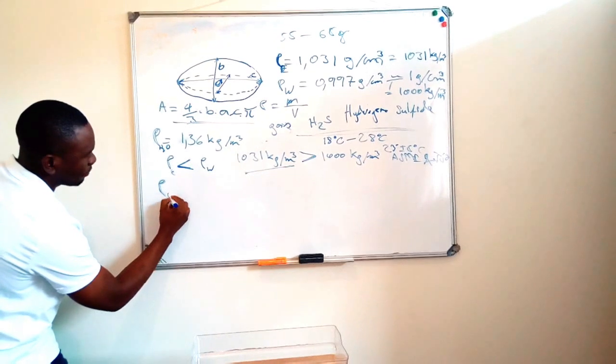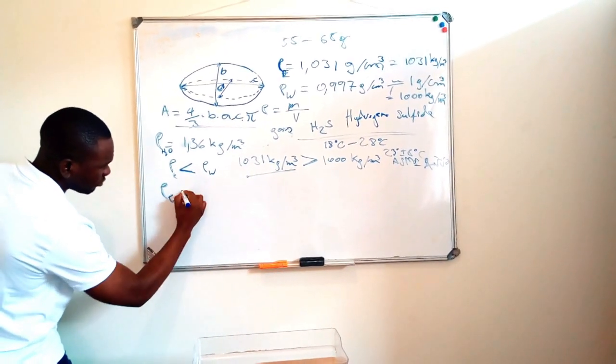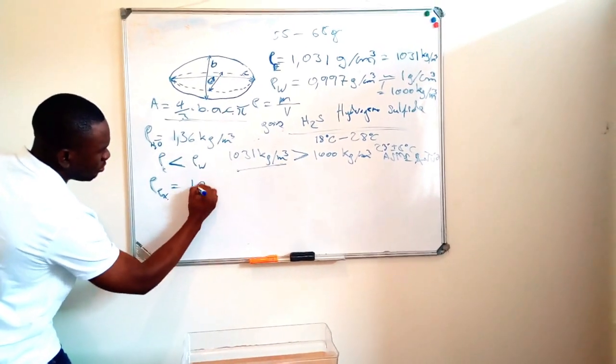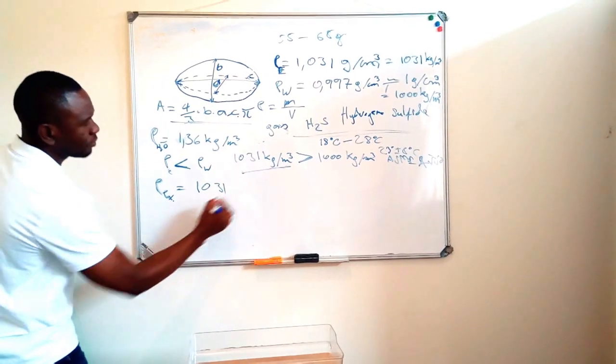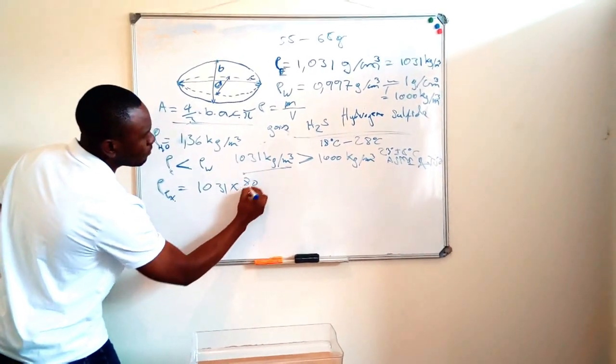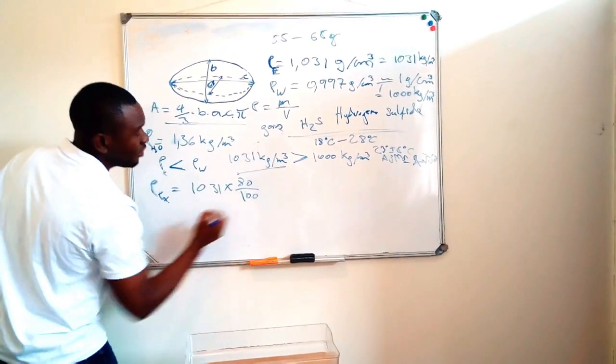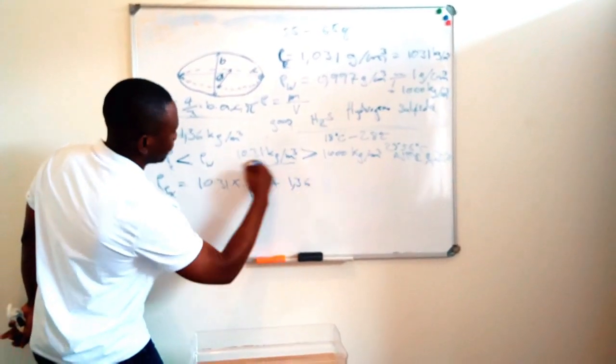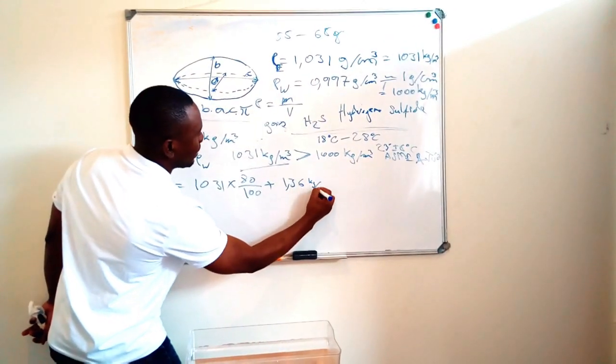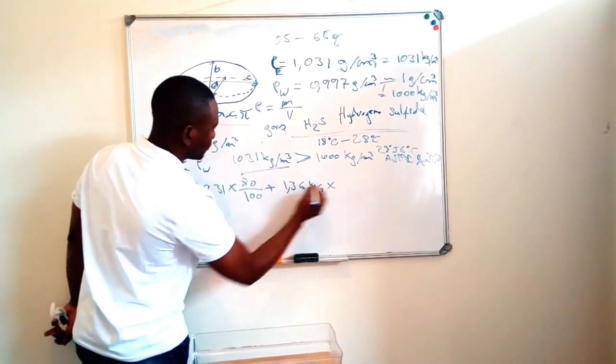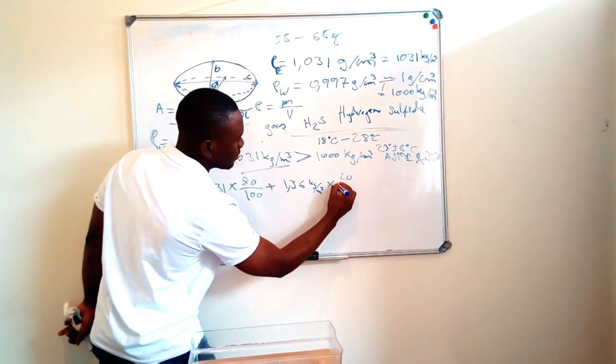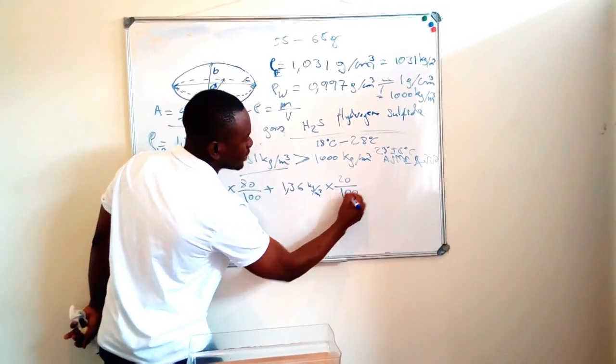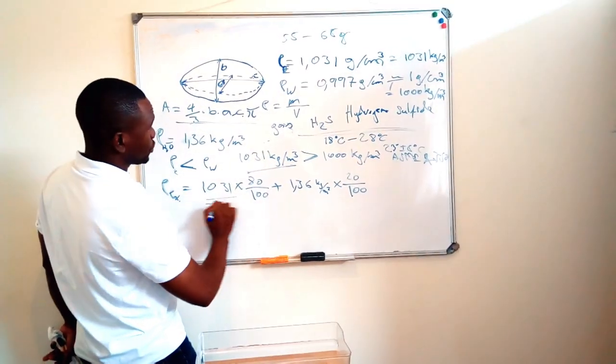So let's say 100% and then 80% of it is still in good state. So the density of these ones, the expired egg, would be equal to 1031 multiplied by 80% divided by 100, plus 1.36 kilograms per cubic meter multiplied by 20 divided by 100.